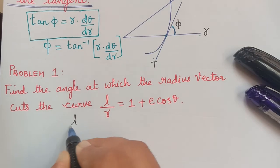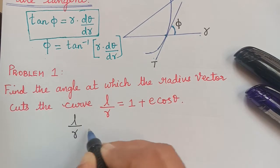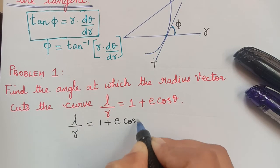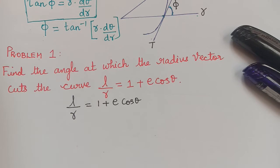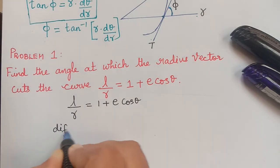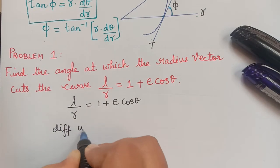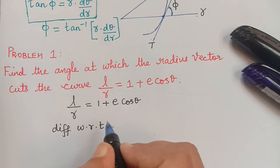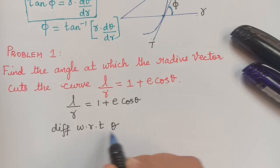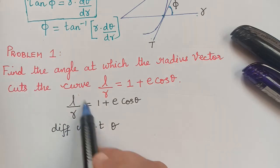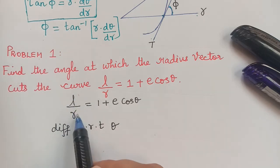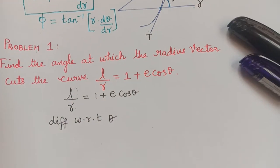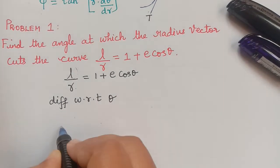First we write the curve given: l/r = 1 + e·cosθ. Now we have to differentiate this with respect to theta. On the left hand side it is l/r, and l is a constant, so on differentiation it will remain as is.